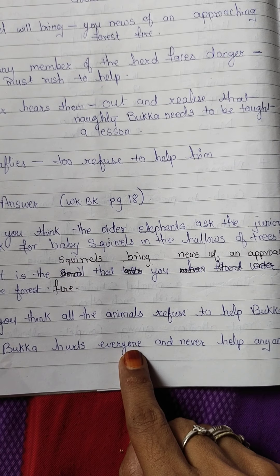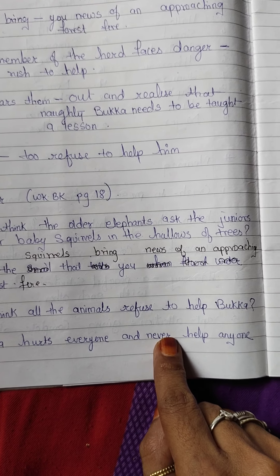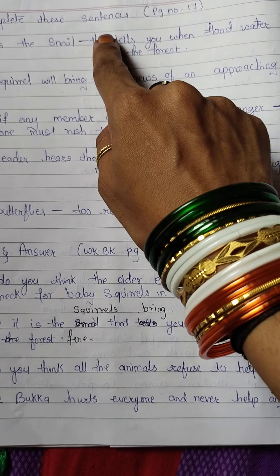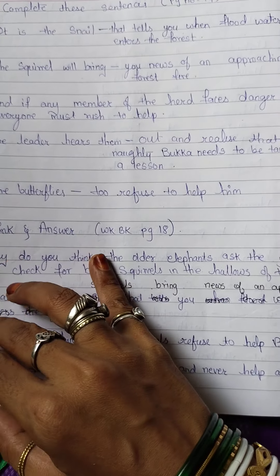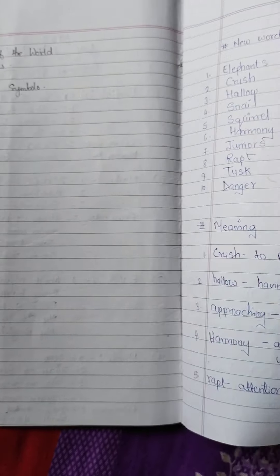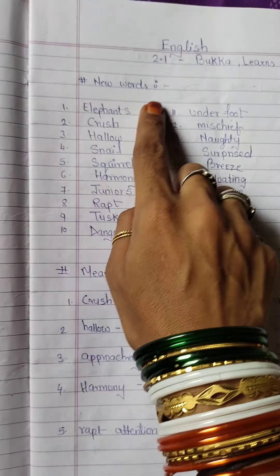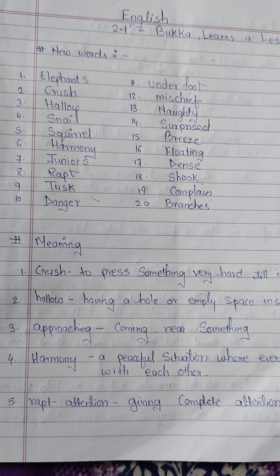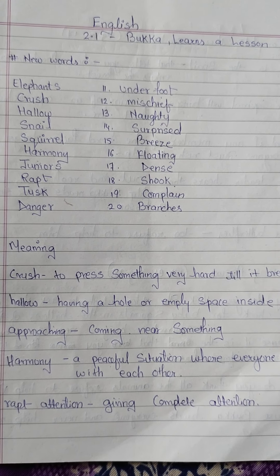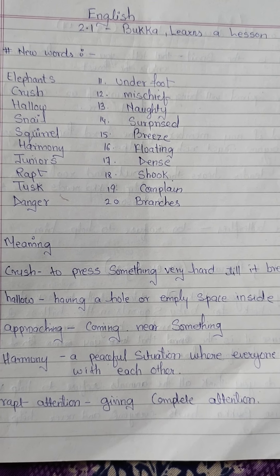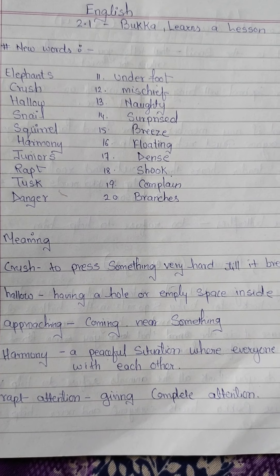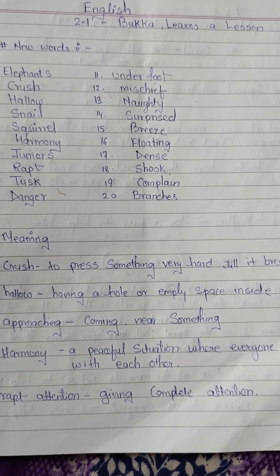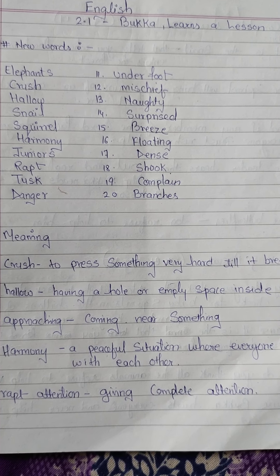Second question: why do you think all the animals refuse to help Bukka? Answer: because Bukka hurts everyone and never helps anyone. So these were the notes of the lesson Bukka Learns a Lesson.